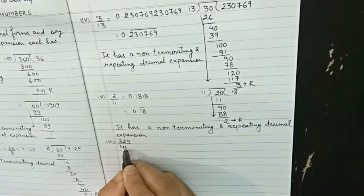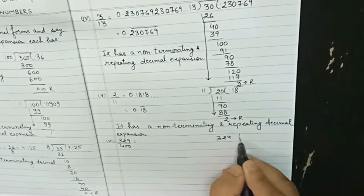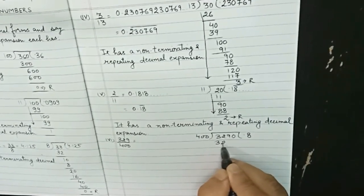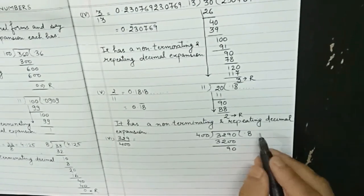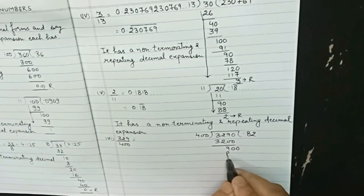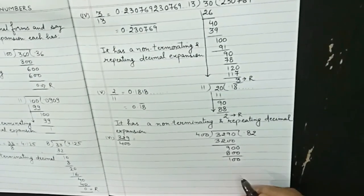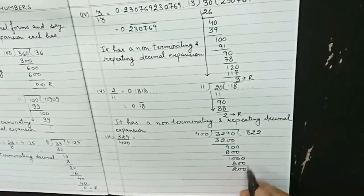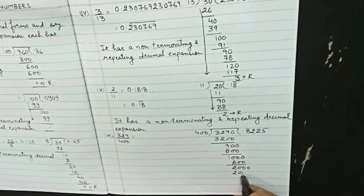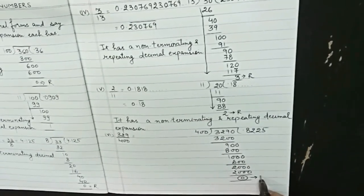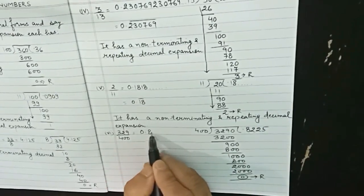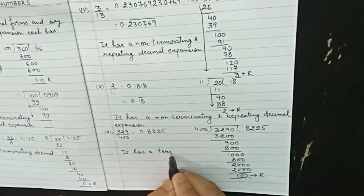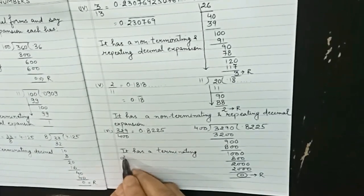The last part is 329 upon 400. Dividing 329 by 400: 329 is smaller than 400, so we put a decimal. After several division steps, the remainder finally becomes zero, giving 0.8225. So this has a terminating decimal expansion.